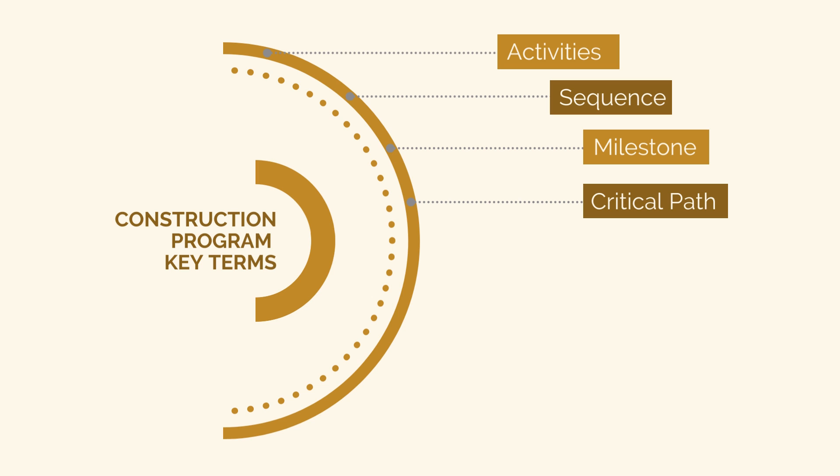Critical path — this is the series of activities that, if delayed, delay project completion. Not all activities are on the critical path. If an activity can be delayed without delaying project completion, then it's not on the critical path. We'll need to understand the critical path when it comes to understanding time-based claims.